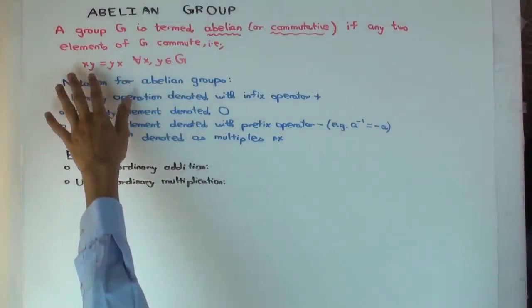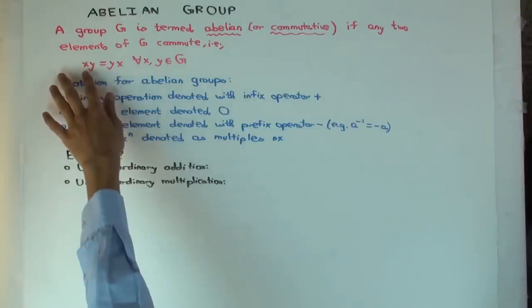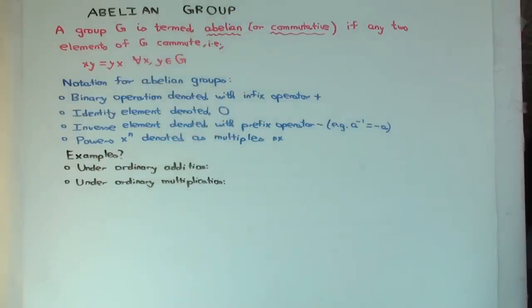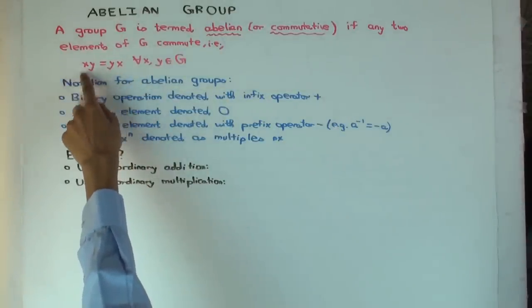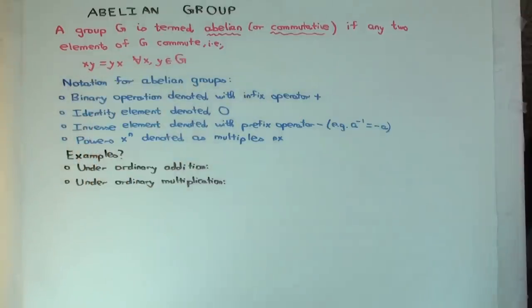Now remember that for groups we generally don't put a symbol for the binary operation, so x y actually just means x star y, where star is the binary operation of the group, but I'm not writing that. So this just means x star y equals y star x, but I just write it in short as x y equals y x.